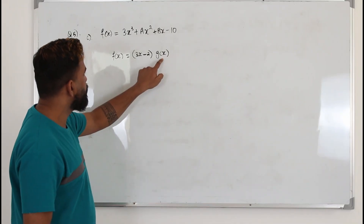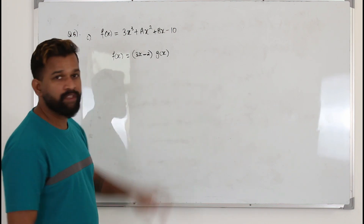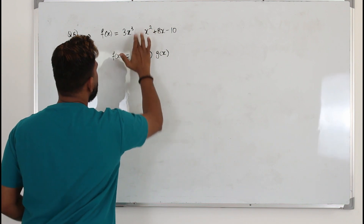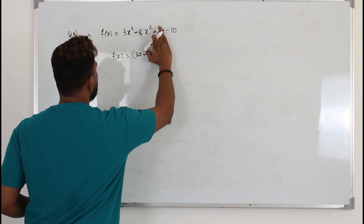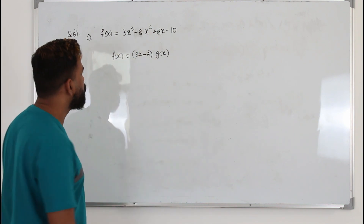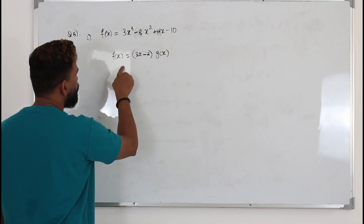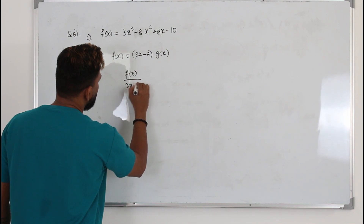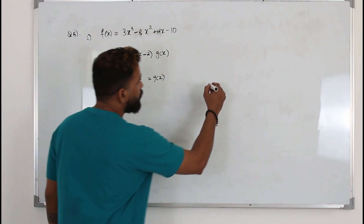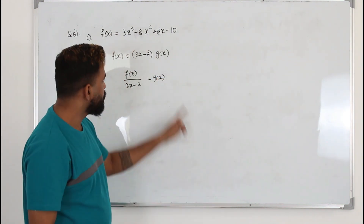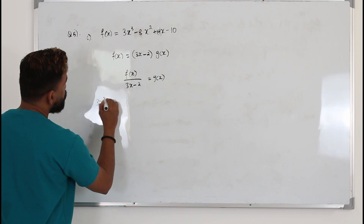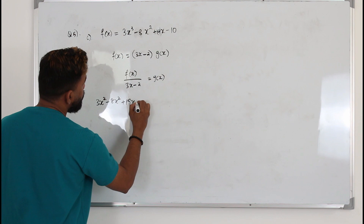In Part C, they want you to find the quadratic expression g(x), where f(x) can be written as (3x - 2)·g(x). First, plug in the values of a and b into the function: a = -8, b = 19. So the function becomes 3x³ - 8x² + 19x - 10. Since 3x - 2 is a factor, you can find g(x) by dividing f(x) by 3x - 2.